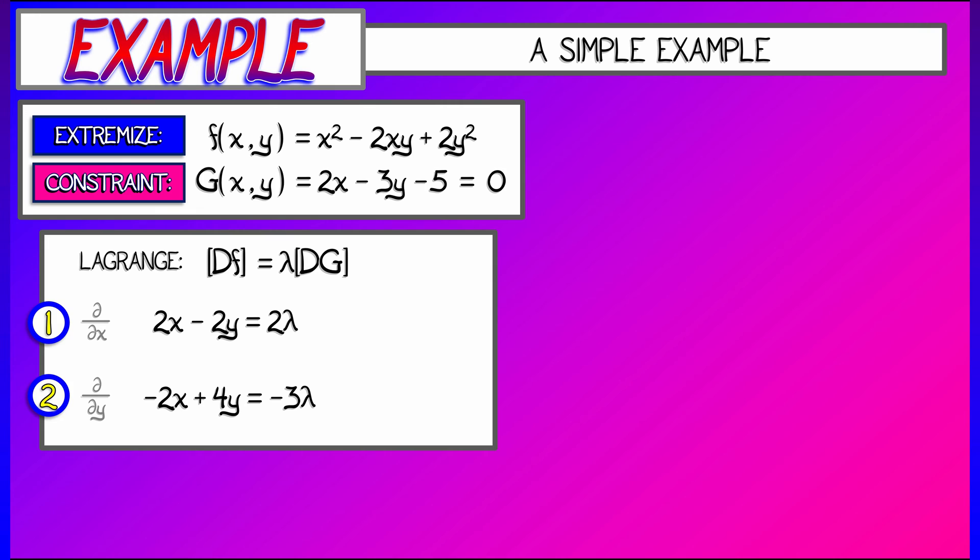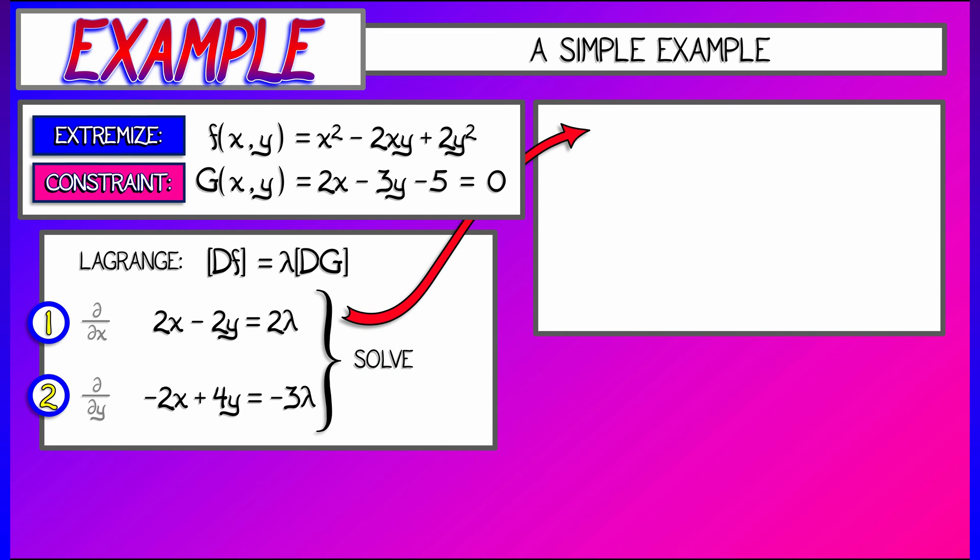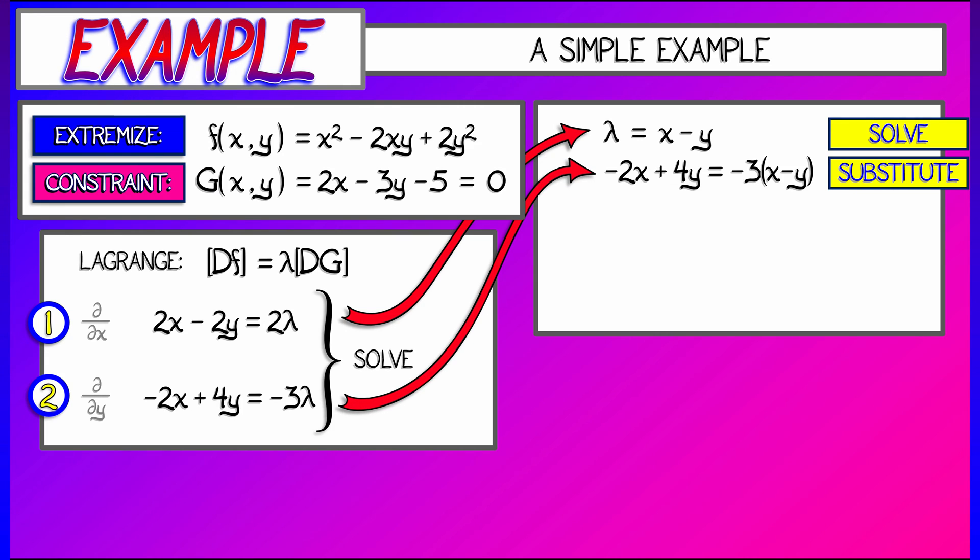This is two equations, three unknowns. What am I going to do? I'm going to solve these and then substitute. I'll take the first equation and say, oh look, cancel the twos, lambda equals x minus y. I substitute that into the second equation to obtain negative 2x plus 4y equals negative 3 times lambda quantity x minus y. Do a bit of algebra, simplify, you're going to get x plus y equals 0, or y equals minus x.